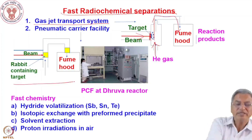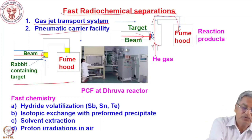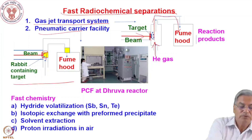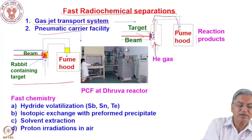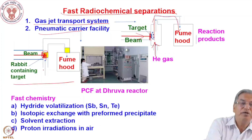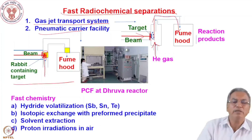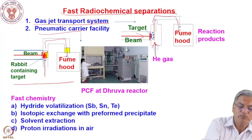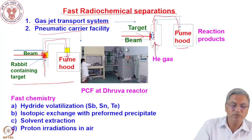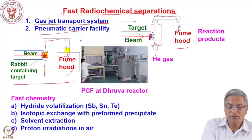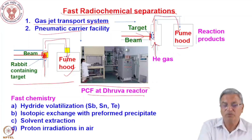Another technique is the pneumatic carrier facility — the 'rabbit.' A rabbit capsule contains the target and is irradiated inside the reactor by neutrons. A pneumatic tube carries the capsule to the fume hood; you break open the capsule and the target is present inside. You can then separate the reaction products from the target. In the gas jet system only reaction products are transported, whereas in the rabbit facility the target is also present. This is a typical pneumatic carrier facility such as the Dhruva reactor.